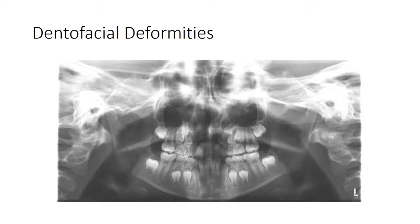This is a panoramic radiograph of a nine-year-old boy with bilateral cleft lip and palate. This patient is in the mixed dentition, having both permanent and primary teeth. There could be retained primary teeth, missing teeth, or extra teeth. It can be hard to know exactly what's going on, but recognizing the pattern and making the appropriate referral to a dental specialist would be good.